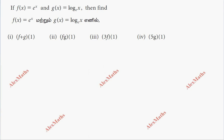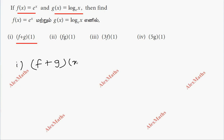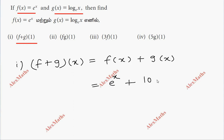Hi students, this is Alex here. We have two functions: f of x and g of x. Find each operation. The first is addition: f plus g of 1. So, f plus g of x is nothing but f of x plus g of x. Here, f of x is equal to e power x, and g of x is equal to log x base e.